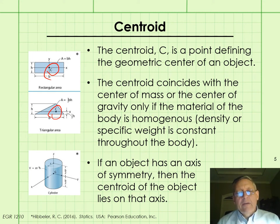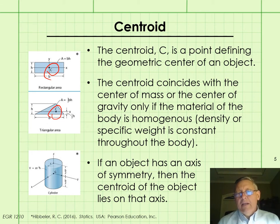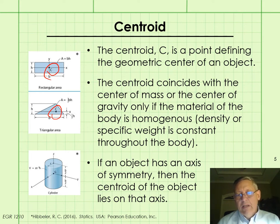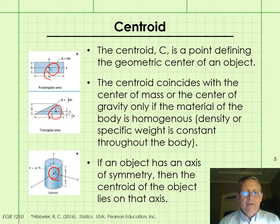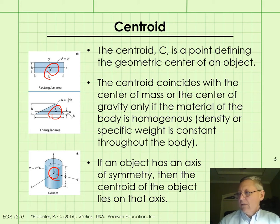The centroid will coincide with the center of mass or the center of gravity only when the material the body is made of is homogeneous — meaning its density or specific weight is constant throughout the body. And if an object has an axis of symmetry, then the centroid of the object lies on that axis. In the figure, the centroid is labeled G, which is also the center of gravity if the object's material is homogeneous throughout.